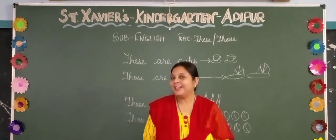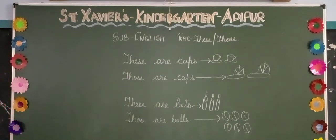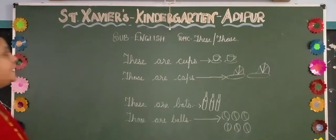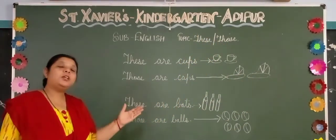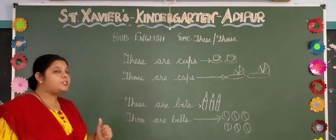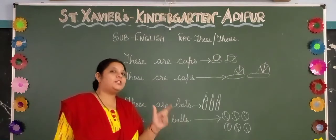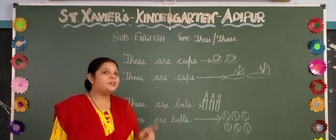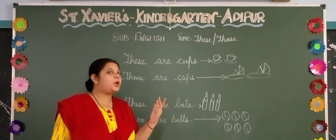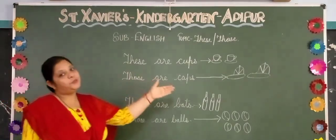Happy happy morning! Let's see what today's topic is. It's about 'these' and 'those.' We have learnt about 'this' and 'that' — that was for one object, so we used to say 'this' or 'that.' Now, if the objects are many, you will use 'these' or 'those.'